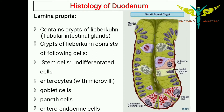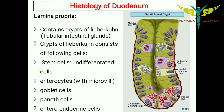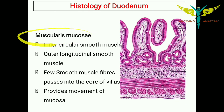The lamina propria of the duodenum contains crypts of Lieberkühn, which are the tubular intestinal glands. These crypts of Lieberkühn consist of the following cells: stem cells or undifferentiated cells, enterocytes with microvilli, goblet cells, Paneth cells, and enteroendocrine cells.